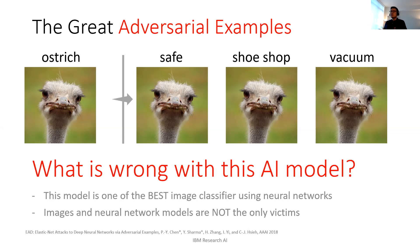To be fair, this is not some arbitrary model — it's one of the best image classifiers from the ImageNet competitions. Also, images and neural networks are not the only victims. Adversarial examples exist in a more general form across other data modalities like text, audio, and time series. Other machine learning models beyond deep neural networks are also vulnerable. I view this as a universal challenge for all machine learning problems.